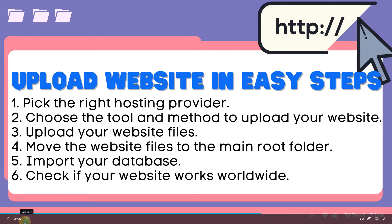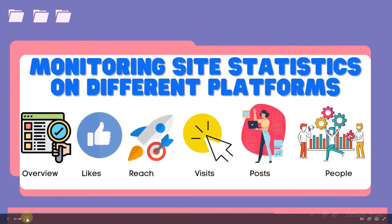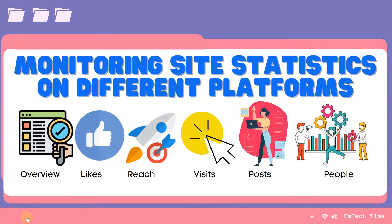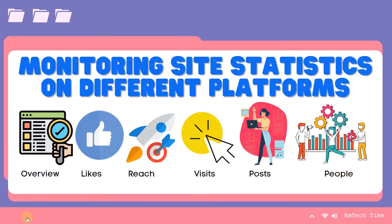After uploading our website, we need to monitor our site statistics on different platforms. We can use the following: Overview — a summary of statistics about our page. Likes — statistics about the trends of page likes. Reach — information about the number of people reached by your post. Visits — data on the number of times your page tabs are visited. Posts — data showing when site visitors visit your site. People — statistics about your audience demographics, including those you have reached and engaged with.